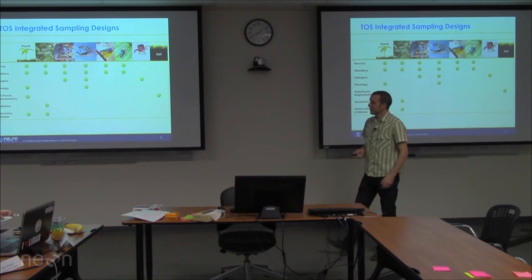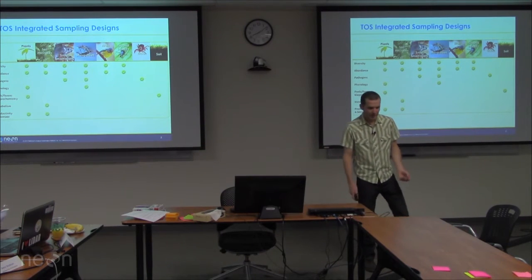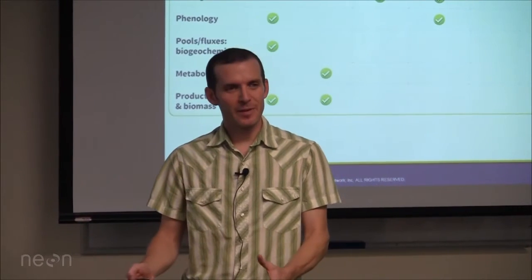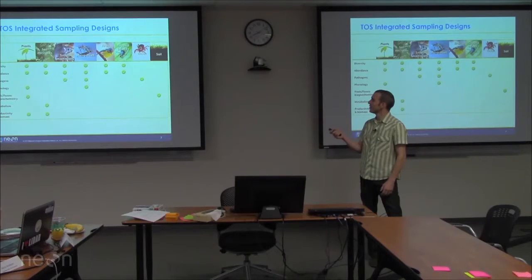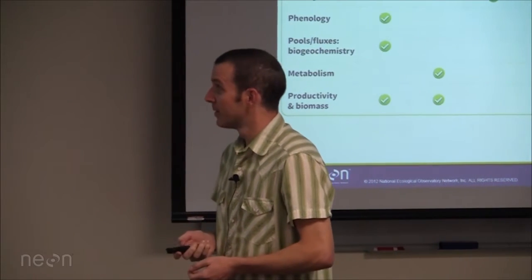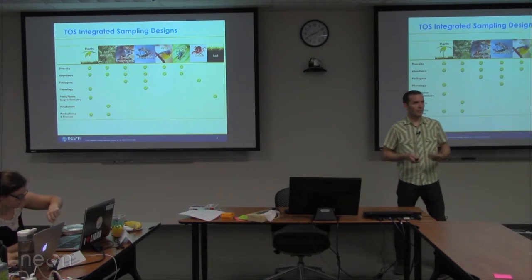I'm a co-team lead of the FSU team, the fundamental sentinel unit. That's the team that builds the terrestrial observation systems — TOS. It's fairly diverse sampling; it's not just plants and integration with remote sensing. It covers a lot of different organisms and modules: plants, soils, microbes, birds, infectious agents, and so on.